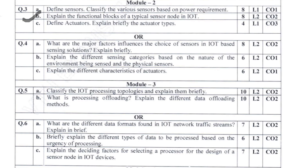Now here you can see: What are the major factors that influence the choice of sensors in an IoT-based sensing solution? You will determine the factors influencing the choices — a sensor cannot be selected randomly; you choose based on some criteria, referred to as the choice of sensor. The next question is on sensing categories — what are the different sensing categories? And then characteristics of actuators — you determine what the characteristics are and what characteristics an actuator should have for a system to function properly. That carries 6 marks. So 8-6-6, totally 20 marks.